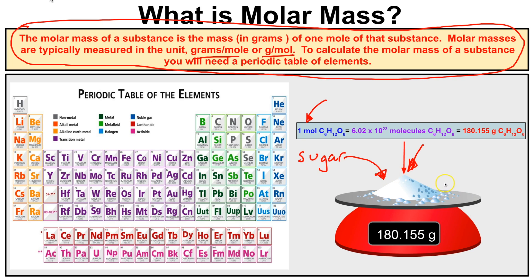But what if you didn't have a scale at all to measure its mass? How can we calculate the molar mass of glucose using numbers? Well, if we have a periodic table we can easily do that. It's important to understand the concept connecting the mole, the amount of molecules or atoms, and the mass — that's what molar mass does. It ties together the mole, Avogadro's number, and the mass of that atom, compound, or molecule. So let's jump right in and take a look at a few examples.